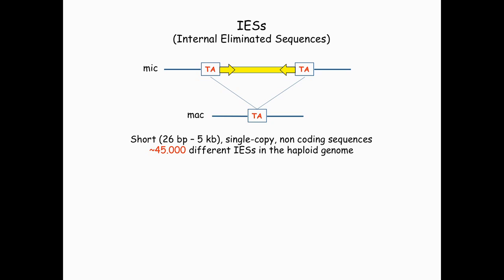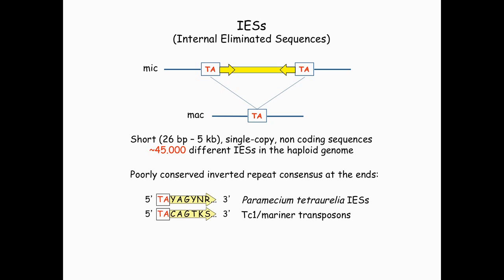The only thing that is conserved between all IESs in the genome is the TA repeats at both ends, which neatly recombine into one during the process of excision. But other than that, nearly all of the 45,000 different IESs have a unique sequence. They are short elements and non-coding. The poor conservation of this consensus at the ends of the IESs had long suggested that they derived from insertions of transposable elements a long time ago that rapidly decayed by mutations and divisions into these short non-coding unique copy sequences.